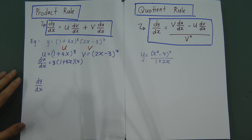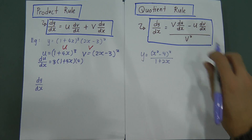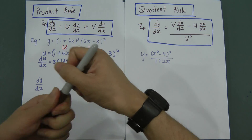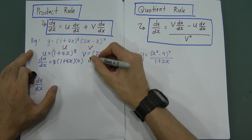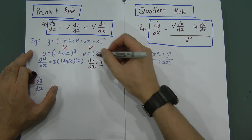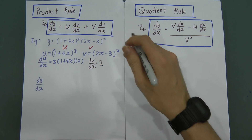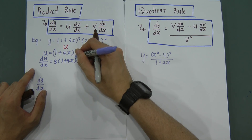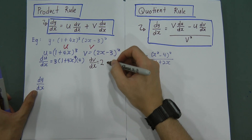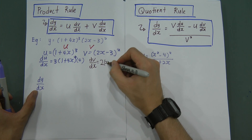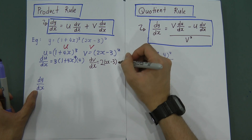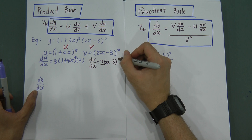Now differentiate V, where V equals (2X − 3)². We call this dv/dx. We move the 2 in front, and then subtract 1 from the power: 2 − 1 gives power of 1. So we get 2(2X − 3)¹. Then differentiate the inside one more time — the derivative of 2X − 3 is 2.